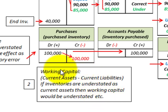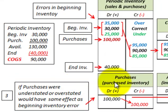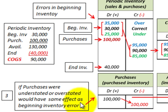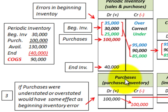Remember that inventory affects working capital, and you need to do your arithmetic to determine whether working capital is understated or overstated. Also, looking at the purchases account: if purchases are understated or overstated, you'd have the same effect as a beginning inventory error. With the periodic method, the purchases account also affects the charge against net income if there are any errors. Next we'll look at errors in the ending inventory and how they affect net income.